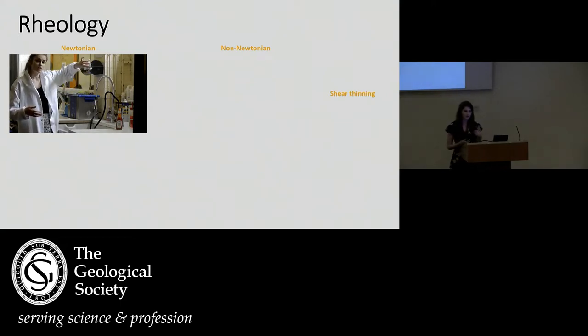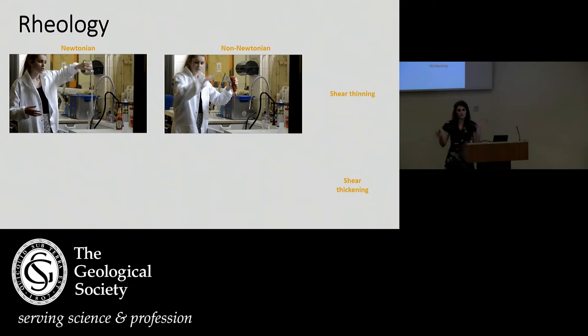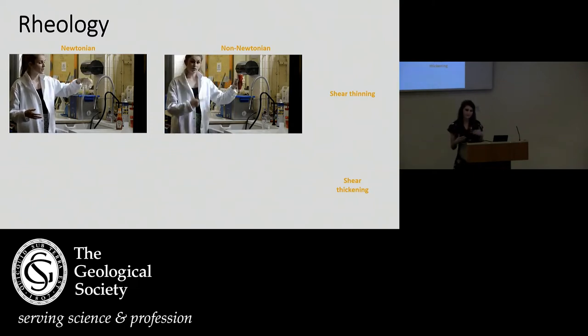Then we can also have a non-Newtonian rheology. In a non-Newtonian rheology, we can have a shear thinning medium and a shear thickening medium. In a shear thinning medium, an example is tomato ketchup. If you hold a tomato ketchup bottle upside down, no tomato ketchup comes out, so you have to hit the bottom. By adding a deformation, our ketchup thins and our viscosity decreases.